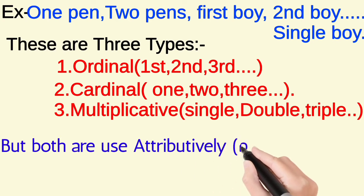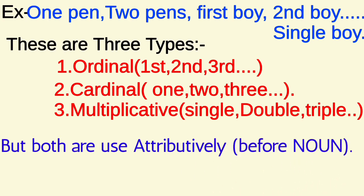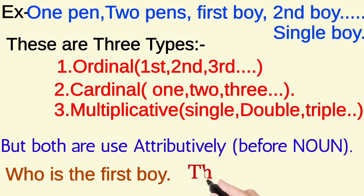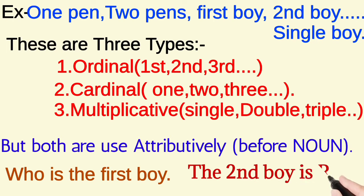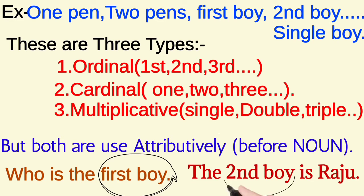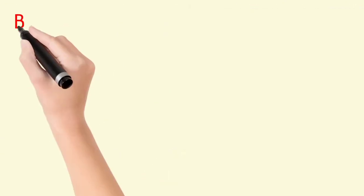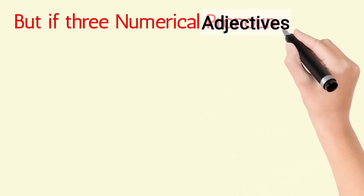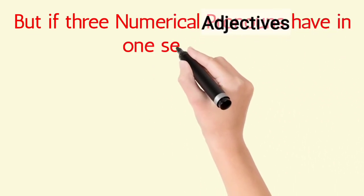Ordinal, cardinal, and multiplicative are all used attributively, meaning they are placed before the noun. For example: who is the first boy? The second boy is Raju. Here 'boy' is the noun, and first and second come before the noun — that is attributive use.